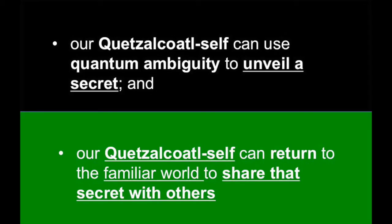By contrast, the Quetzalcoatl self hidden in the second attention can use quantum ambiguity to unveil a secret, and the Quetzalcoatl self hidden in the third attention can return to the familiar world in order to share the secret with others.